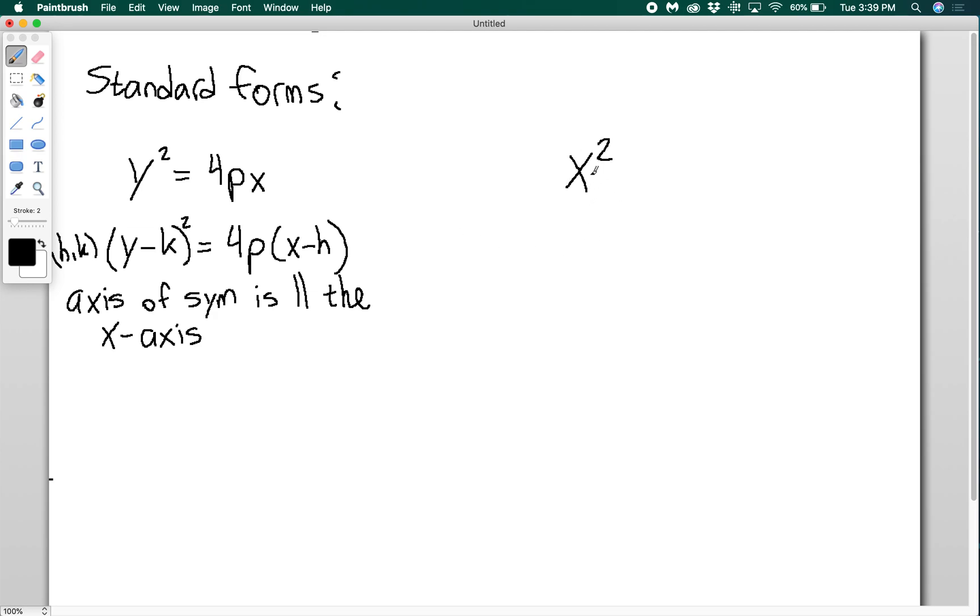You could have the x term be squared and the y term be linear, so x squared equals 4py. If you have this that's not centered at the origin, then this equation would be x minus h squared equals 4py minus k. In this case, the axis of symmetry is parallel to the y-axis.